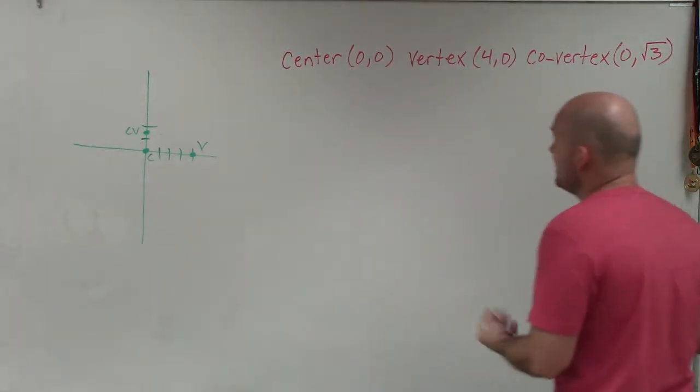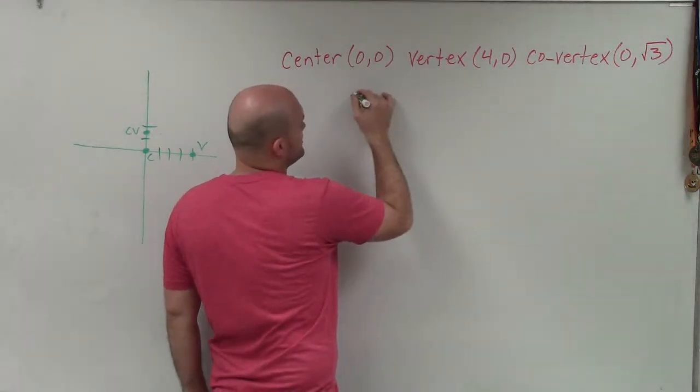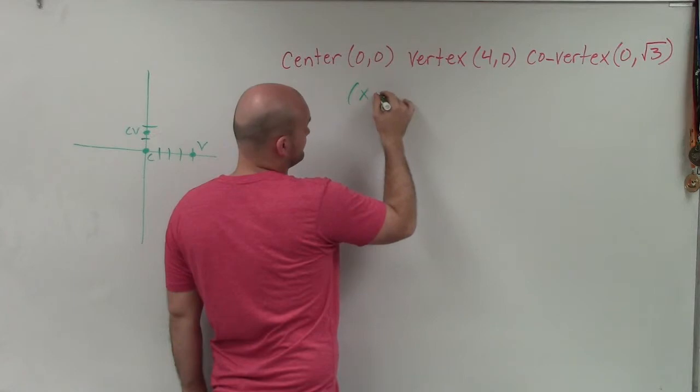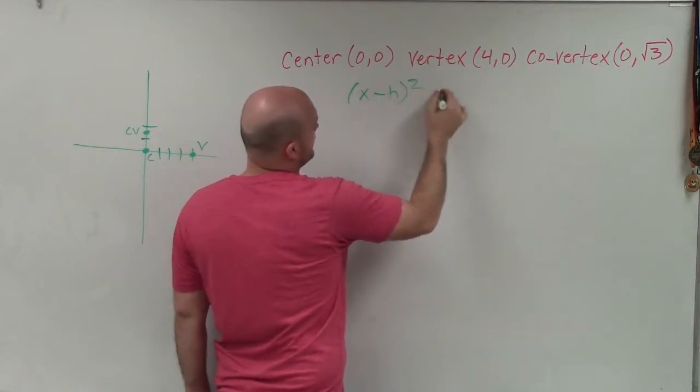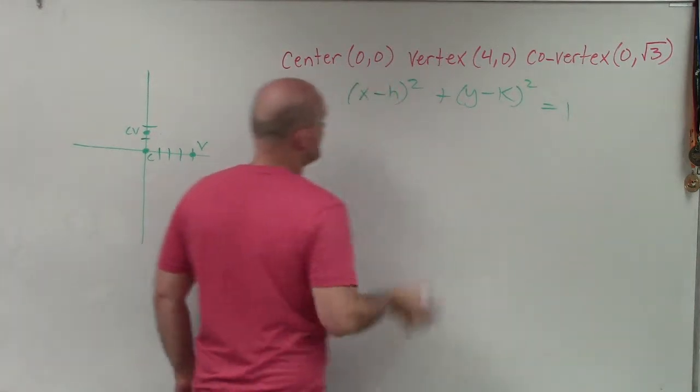Now that I know it's horizontal, I need the general form for a horizontal ellipse. I have (x - h)²/a² + (y - k)²/b² = 1.